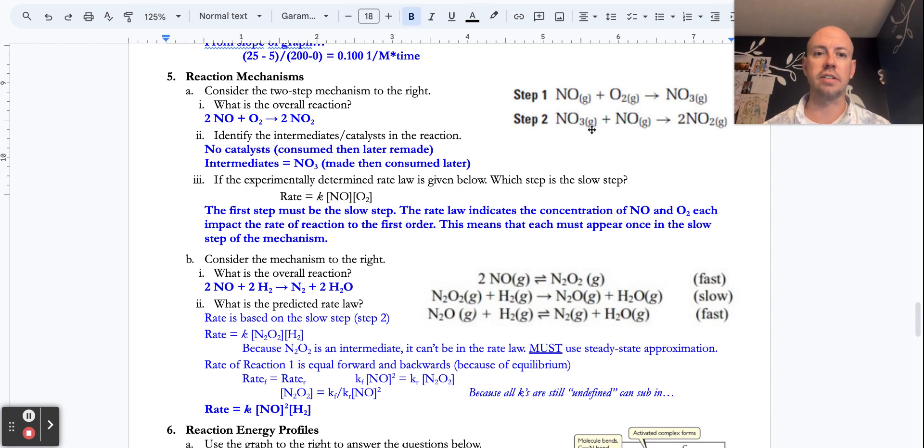That nitrogen trioxide reacts with another NO to make two NO2s. Throughout this reaction, we've got a collision here that makes them stick together. That would be a bimolecular collision, and then another bimolecular collision. That thing we made ran into another molecule that's just hanging out here to make our product.